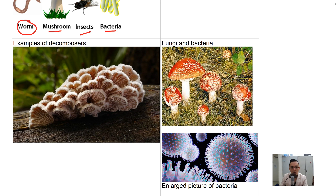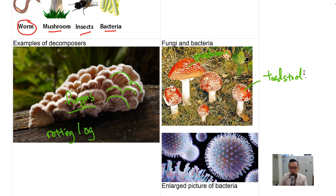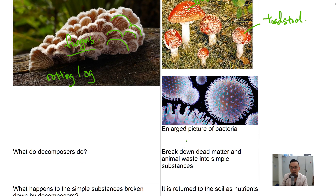This is a rotting log — a tree that has fallen down and is rotting. All these things here are fungus, like mushrooms. This type of mushroom is specifically known as a toadstool. This enlarged picture shows bacteria, which is also classified as a decomposer.